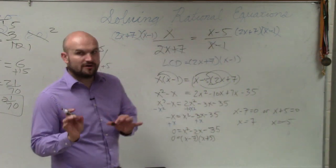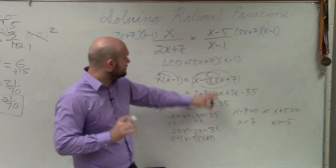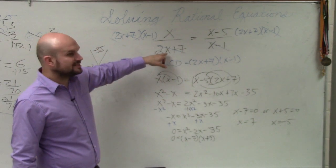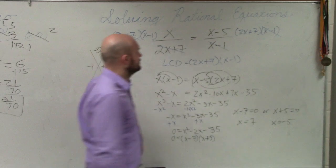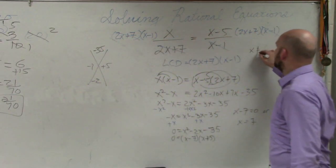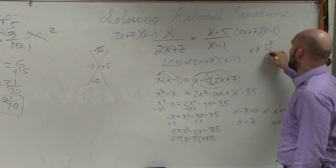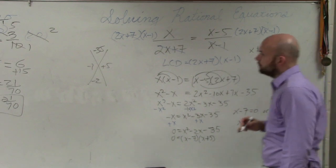Now, when we're solving equations, though, we want to also make sure we go back to our problem. In here, what are the two constraints that x cannot equal? Well, x cannot equal a negative 7 halves, and x cannot equal positive 1.